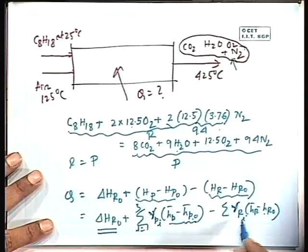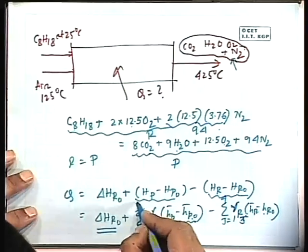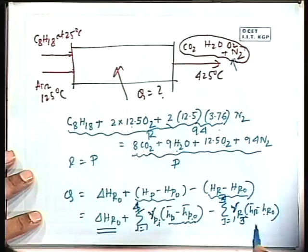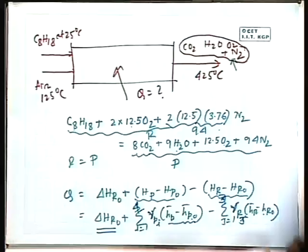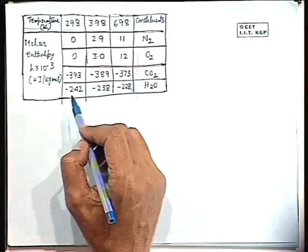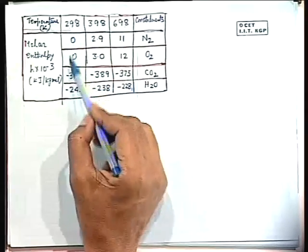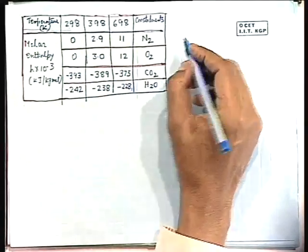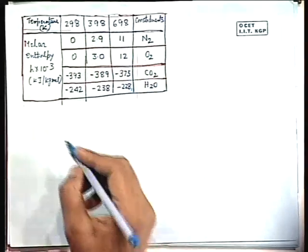For H₂O: 9 × (H̄ at 698K − H̄_0) = 9 × (−228 + 242) × 10³. These values are the molar enthalpies of CO₂ and H₂O — equivalent to their enthalpies of formation at standard state. For O₂: 12.5 × (H̄_O₂), and since O₂ is an element its H̄_0 = 0. For N₂: 94 × H̄_N₂ at 698 K. The table provides values at temperatures 298 K, 398 K, and 698 K.